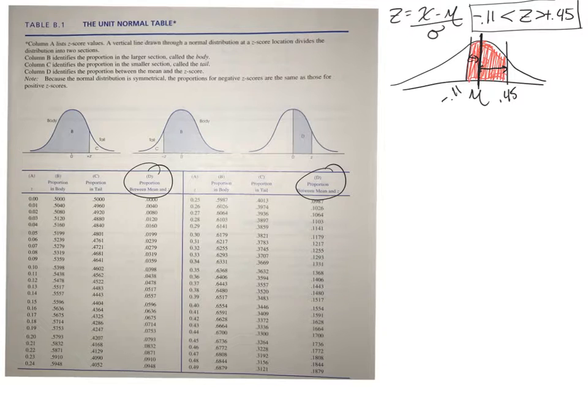Okay, so the first thing we need to do is find 0.11 for z. And 0.11 for z is right here. So again, we're looking in the D column. So we want 0.0438 is our 0.11 for z.